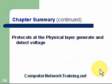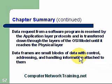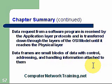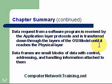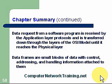Protocols at the physical layer generate the voltages or logic levels — the ones and zeros sent out over cables or media. Data requests from a software program are received by the application layer and transferred down through the layers of the OSI model until reaching the physical layer. Data frames are small blocks of data with control addressing, and MAC addressing is part of what we call frames.